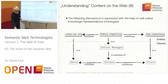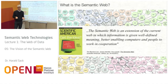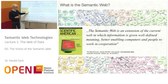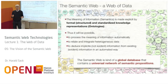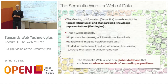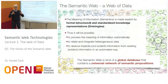Now we can define what the semantic web is. The semantic web is nothing else than an extension of the current web in which information is given a well-defined meaning in the form of semantic annotations, better enabling computers and people to work in cooperation. The meaning of information is made explicit with the help of formal, structured, and standardized knowledge representation — which are ontologies. This makes it possible to process the meaning of information in an automated way, to relate and integrate previously heterogeneous data, and to deduce implicit and not evident information from existing information in an automated way. The semantic web is a global database that contains a universal network of semantic propositions and assertions.